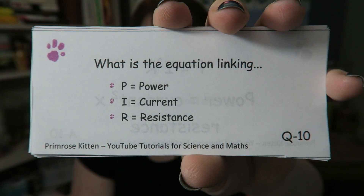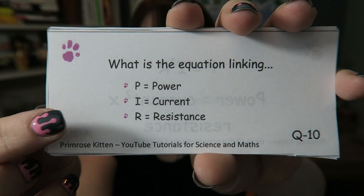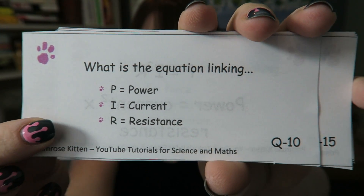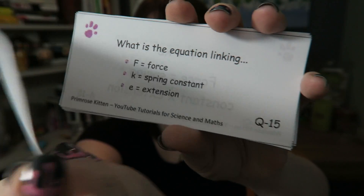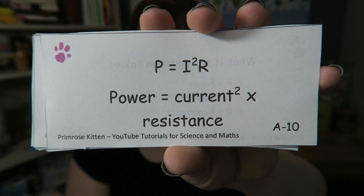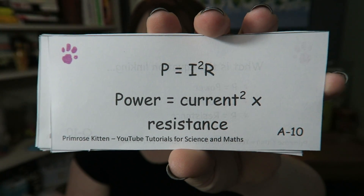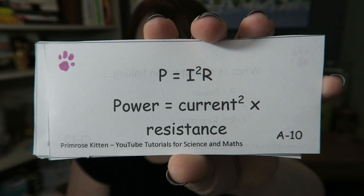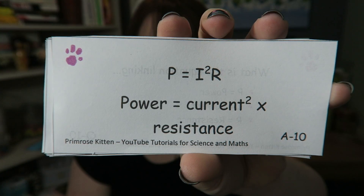What is the equation linking power, current, and resistance? Power equals current squared times resistance.